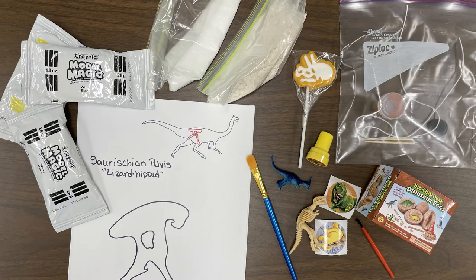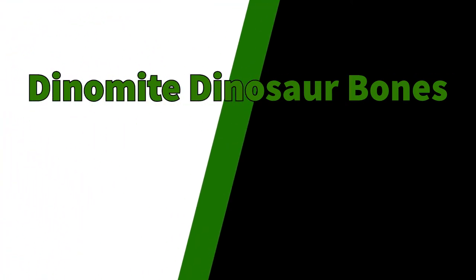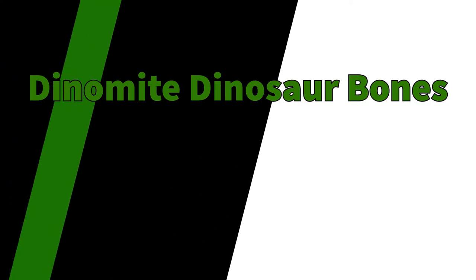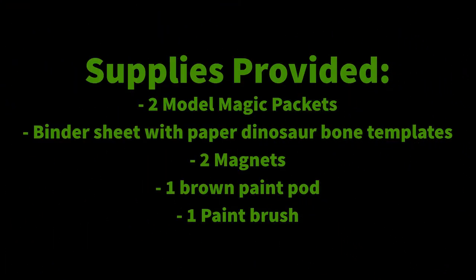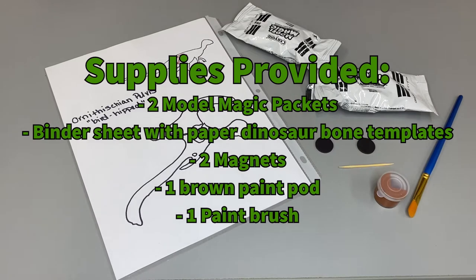Let's get started. First, we are going to recreate some dinosaur bones. Supplies needed for this activity will be two packets of model magic, one binder sheet with the templates titled ornithischian and saurischian pelvis facing outwards, two magnets, one paint pod, and a paintbrush.